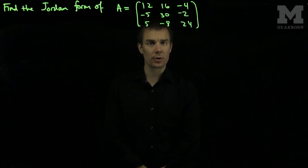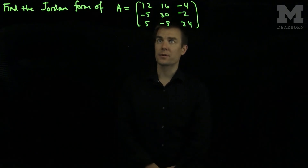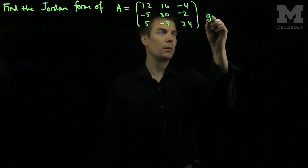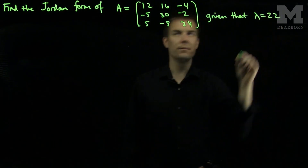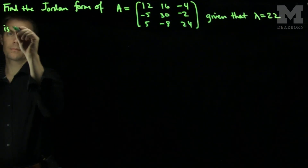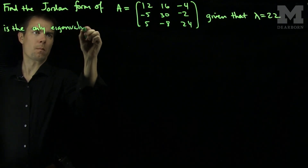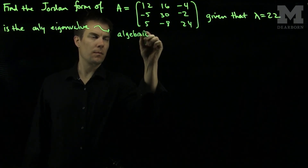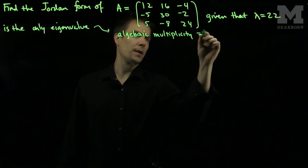Hello students. In this video we'll find the Jordan canonical form of a 3x3 matrix. Suppose we wish to find the Jordan form of a matrix A, which is [12, 16, -4; -5, 30, -2; 5, -8, 24], given that lambda equals 22 is the only eigenvalue. This is equivalent to saying that the algebraic multiplicity is equal to 3.